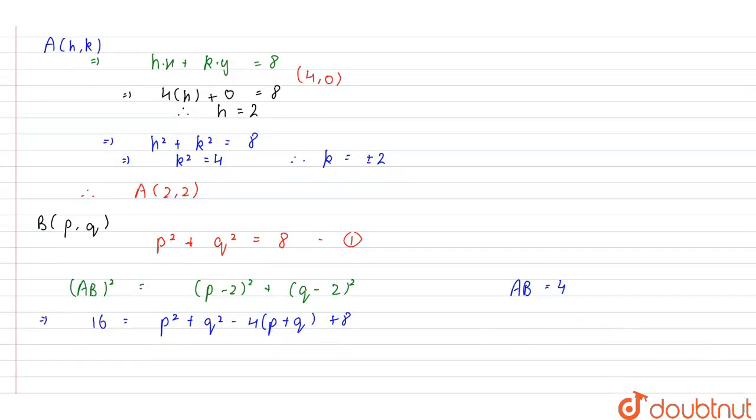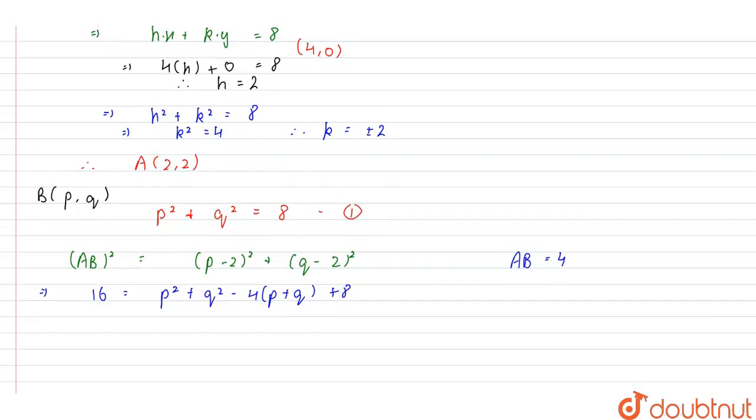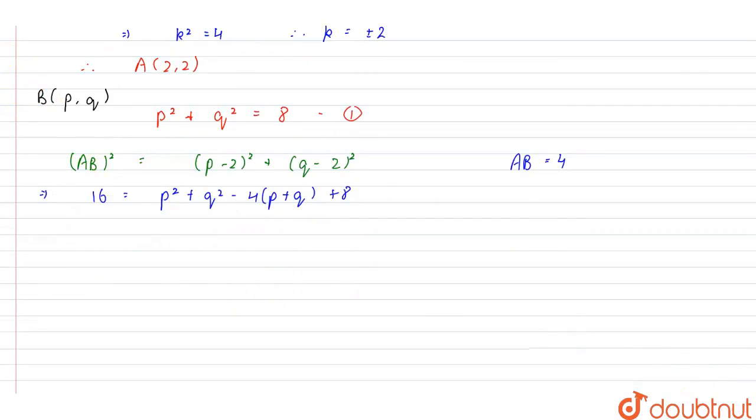Now, from the first equation, we have p² plus q² is equal to 8. So, this equation becomes 16 is equal to 16 minus 4 into (p plus q). From here, we get p plus q is equal to 0. That is, p is equal to minus q.